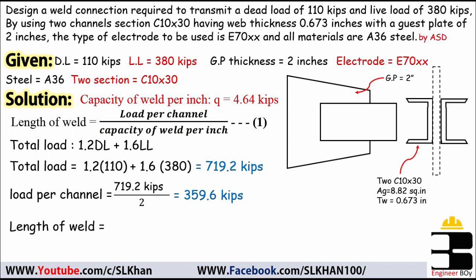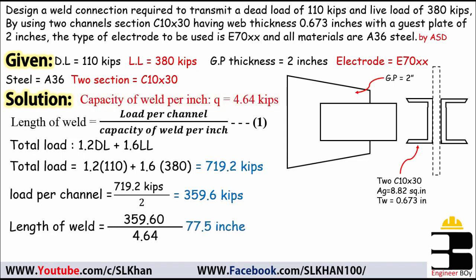Plugging into the equation: length of weld = load per channel / weld capacity per inch = 359.6 kips / 4.64 kips per inch = 78 inches. This means we must provide 78 inches of weld length on the channel section.